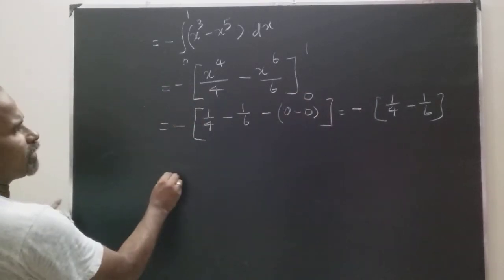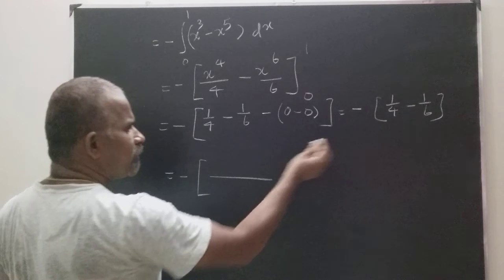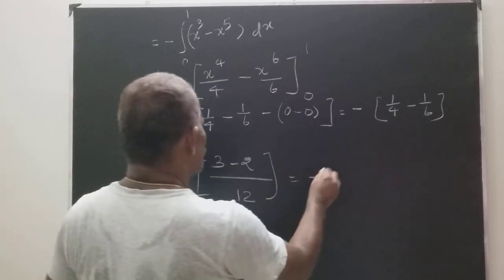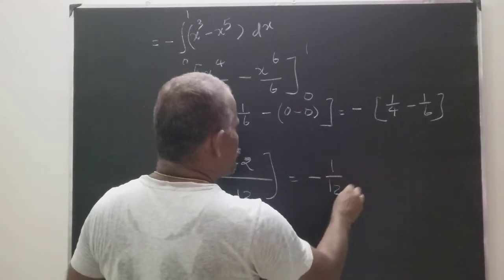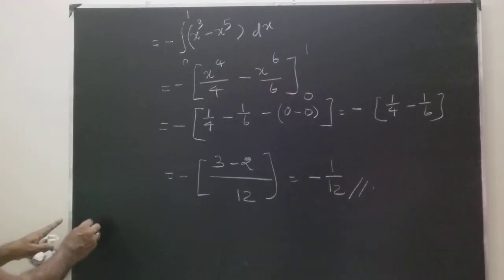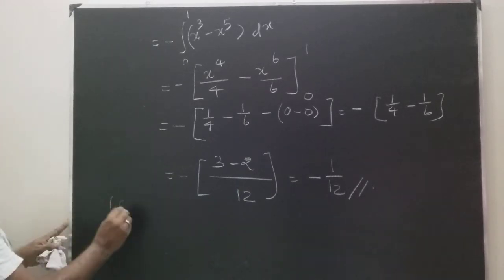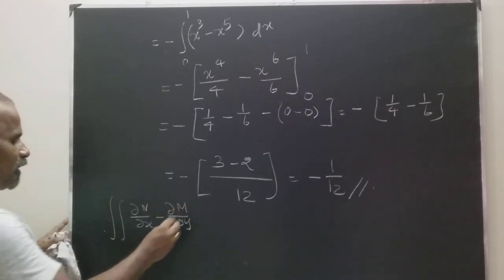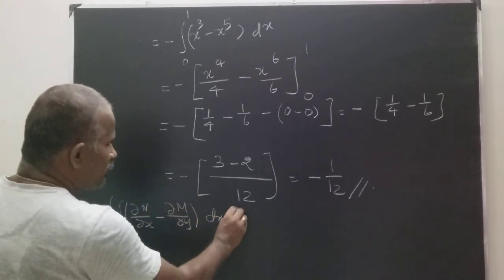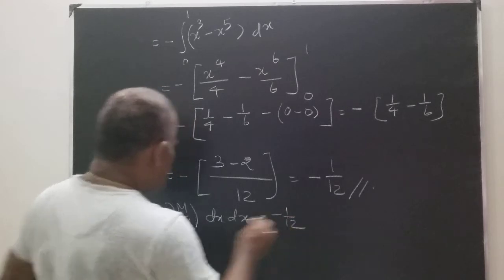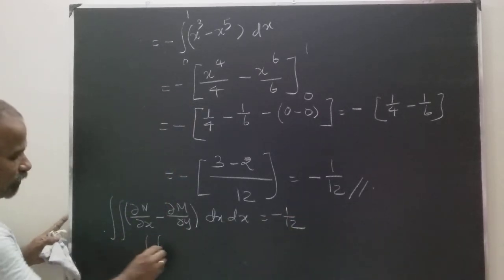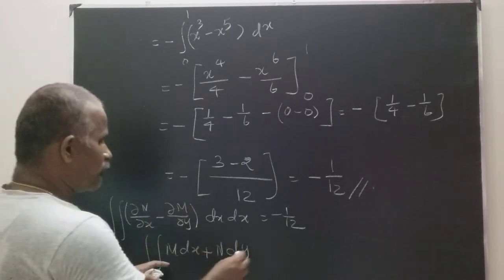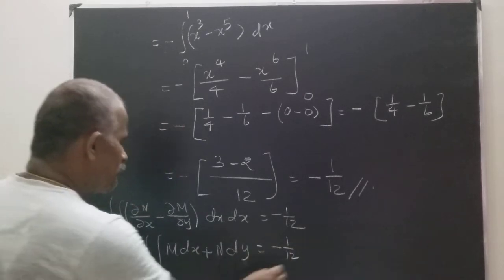Therefore, the double integral of (∂N/∂x minus ∂M/∂y) dx dy equals minus 1/12. By Green's theorem, this equals the line integral over c of M dx plus N dy, which is our required integral. So the answer is minus 1/12. Hence the proof.